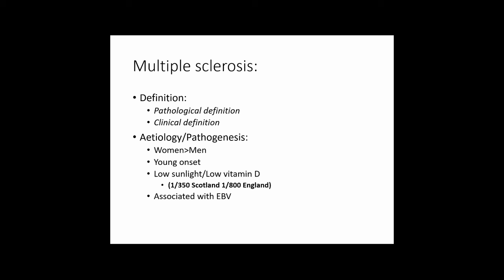Regarding the etiology and epidemiology of multiple sclerosis: it affects women more than men and typically affects young patients. In exam questions, a patient presenting with acute onset CNS symptoms aged 60 is very unlikely to have MS, whereas a young woman aged 20–30 presenting with acute onset optic neuritis should have MS as a top differential.